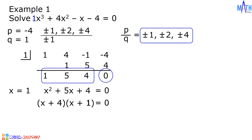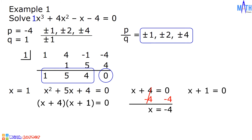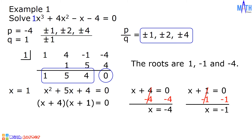Let us use the zero-factor property in finding the roots. First, we have x plus 4 equals 0. Let us add negative 4 on both sides of the equation. Since 4 plus negative 4 is equal to 0, we have x on the left side. On the right side, 0 plus negative 4 equals negative 4. Next, we have x plus 1 equals 0. Let us add negative 1 on both sides. We have x equals negative 1. The roots of x cubed plus 4x squared minus x minus 4 equals 0 are positive 1, negative 1, and negative 4.